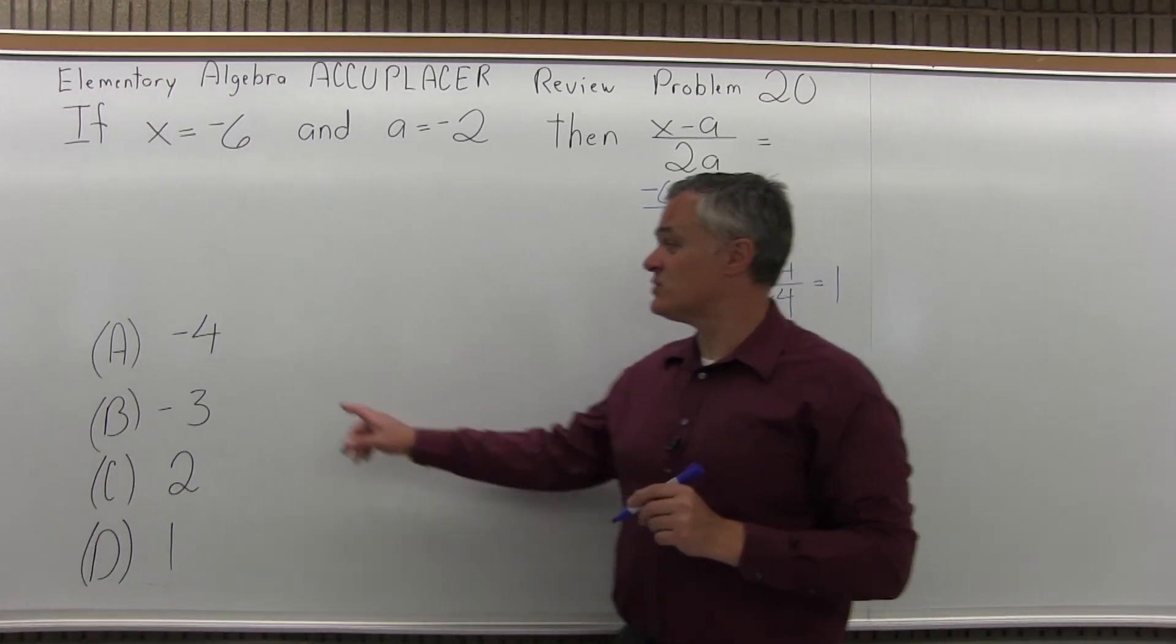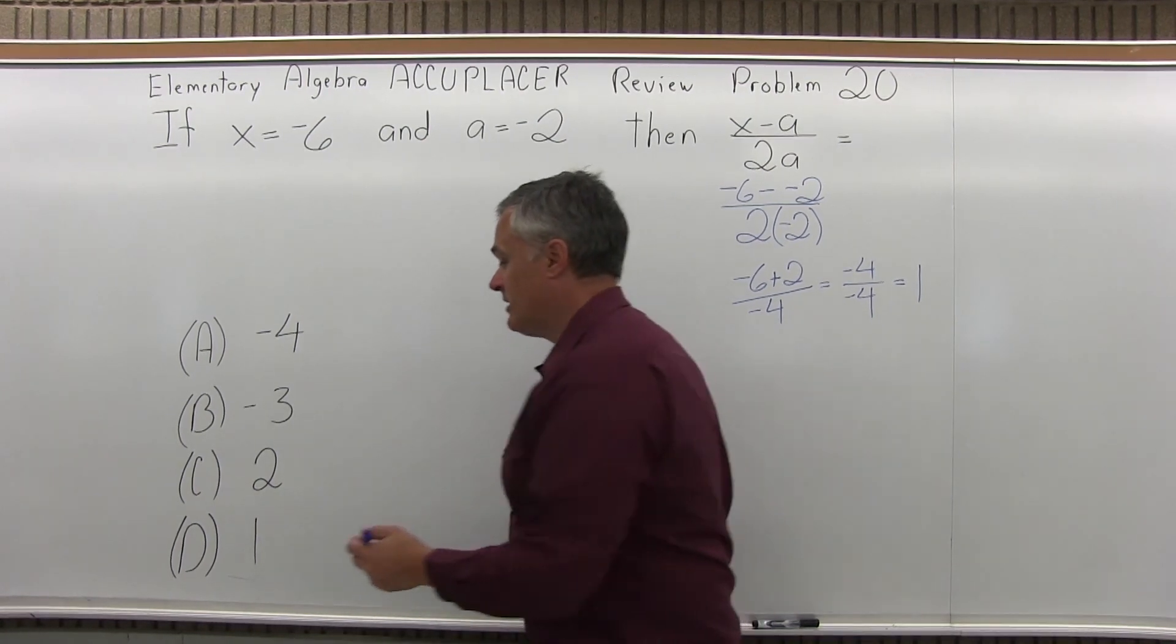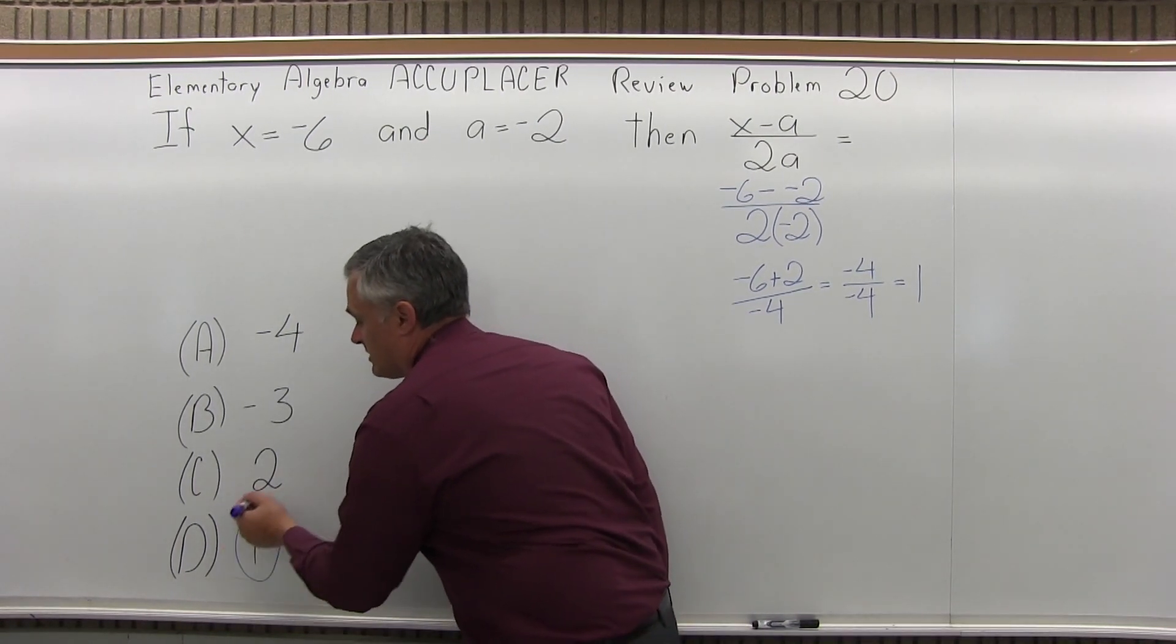Hopefully if I look, one of my options is 1, and sure enough it is, option D is 1. So the answer to 20 is option D.